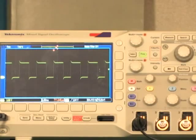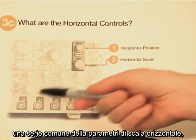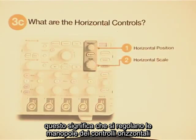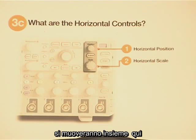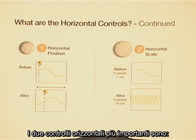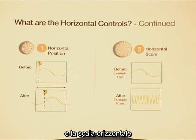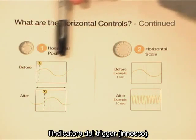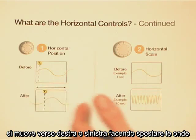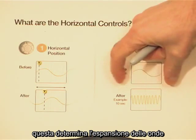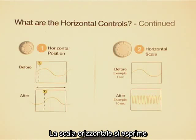Can we move on to see what the horizontal controls do? All of the input channels share one common set of horizontal scale parameters. That means as you adjust the horizontal controls, all of the waveforms will move together on the screen. The two most important horizontal controls are the horizontal position and the horizontal scale. As you move the horizontal position, the trigger indicator moves left or right, causing all waveforms on the screen to move left or right together. As you adjust the horizontal scale, all waveforms on screen expand or contract horizontally.